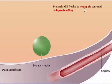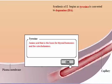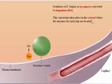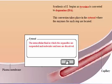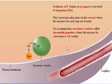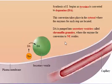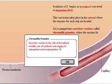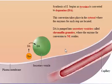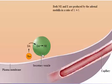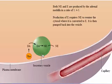Synthesis of epinephrine begins as tyrosine is converted to dopamine. This conversion takes place in the cytosol where the enzymes for each step are located. Dopamine is pumped into secretory vesicles called chromaffin granules, where the enzyme for conversion to norepinephrine resides. Production of epinephrine requires norepinephrine to re-enter the cytosol where it is converted to epinephrine, and is then pumped back into the vesicle.